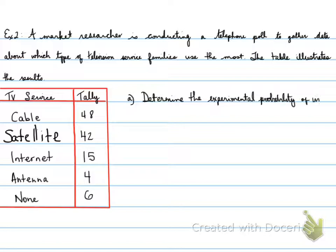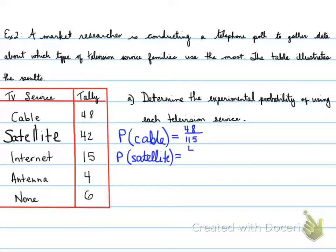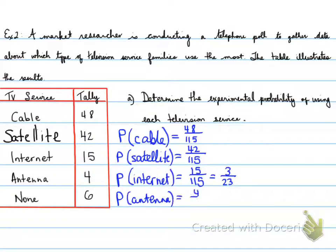Question A says: Determine the experimental probability of using each television service. It doesn't say what kind, so I would have to accept all three possibilities—percent, fraction, or decimal. Let's do that. Probability of cable equals 48 out of 115. That can't be reduced, so we leave it as 48 over 115. Probability of satellite is 42 out of 115. Internet is 15 out of 115, which can be reduced to 3 over 23. Probability of antenna is 4 out of 115, and probability of none is 6 over 115. There are your probabilities of the different types of television service.